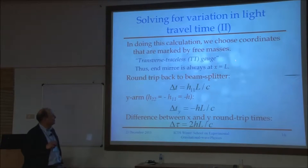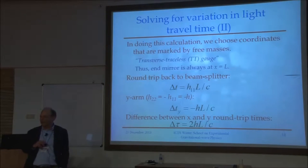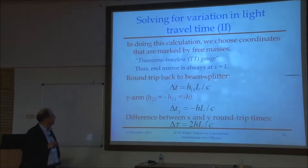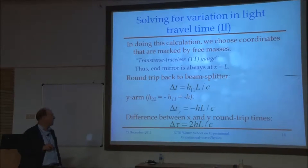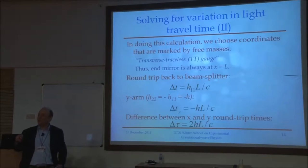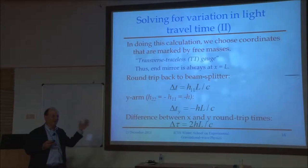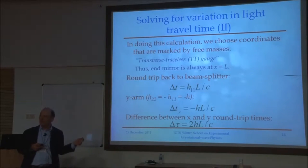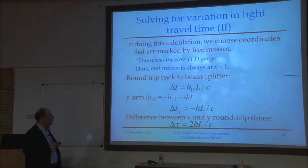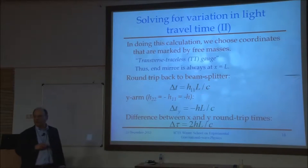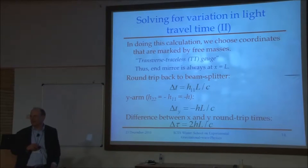In the transverse traceless gauge, ETMx is always a coordinate distance L from the beam splitter. But still, there's something to measure. We bounce the light off that mirrored surface on ETMx and it comes back to the beam splitter, picking up the same extra time on the return trip — since H is effectively constant for the duration of out and back. So the total extra time in the round trip is H times L over C.